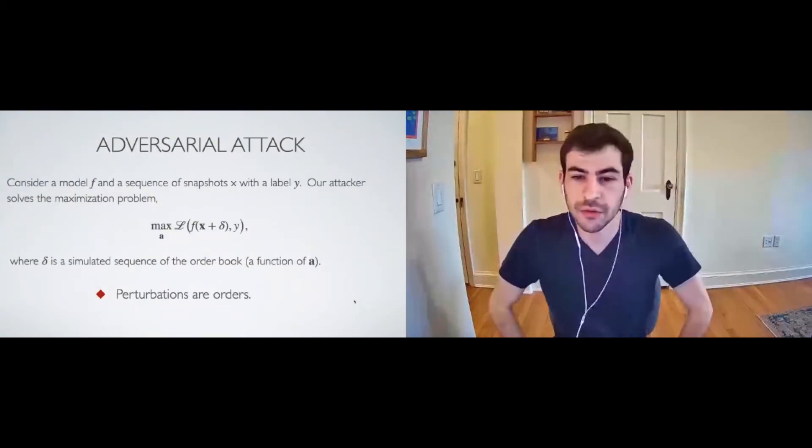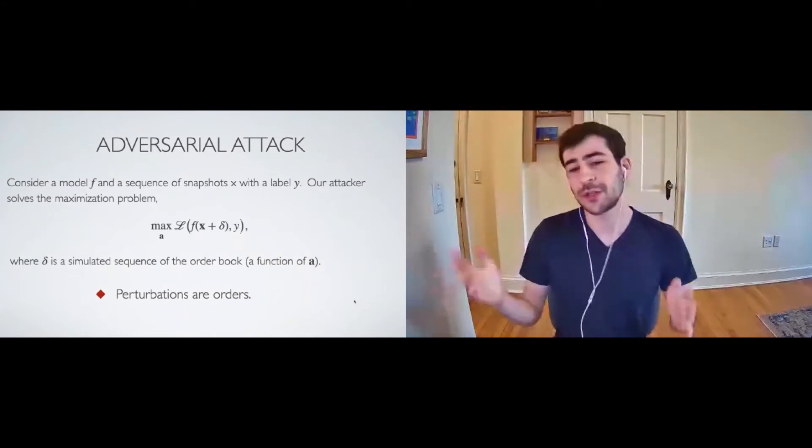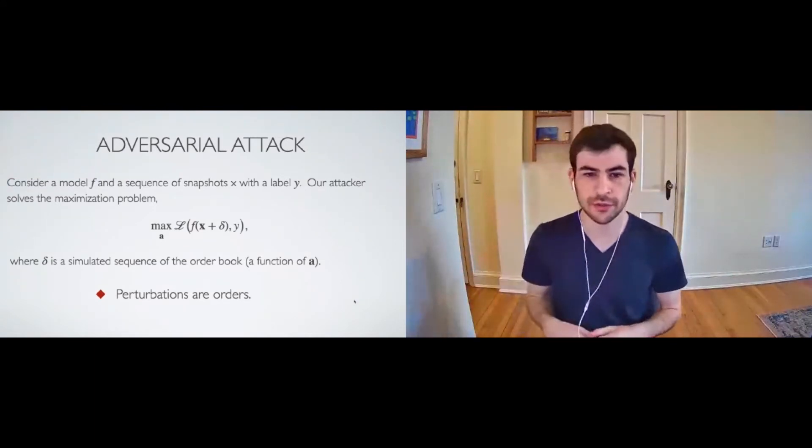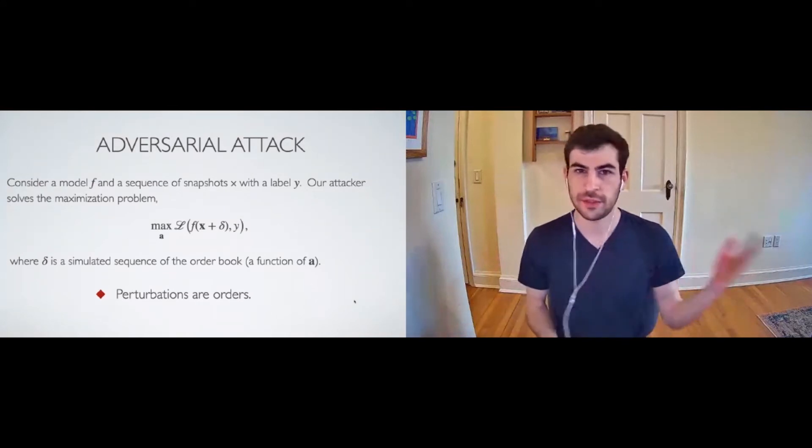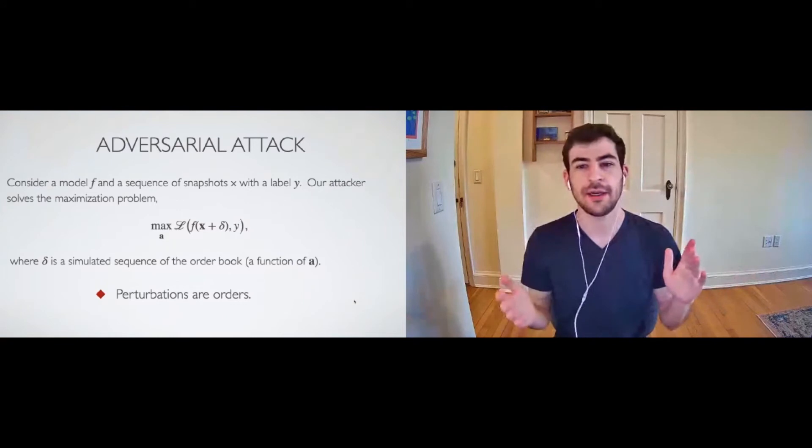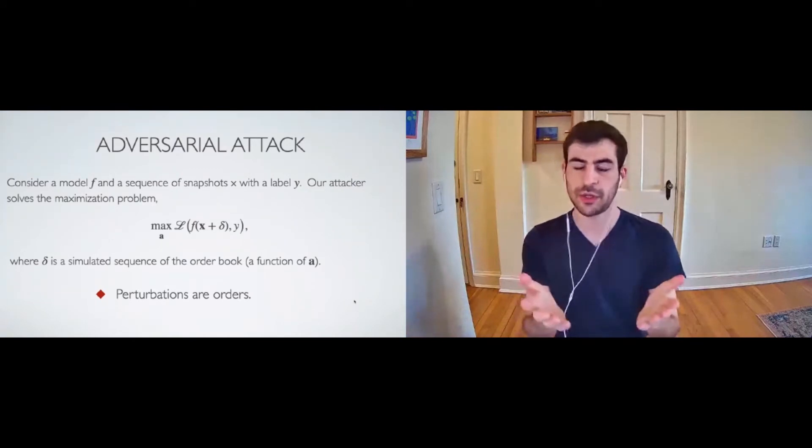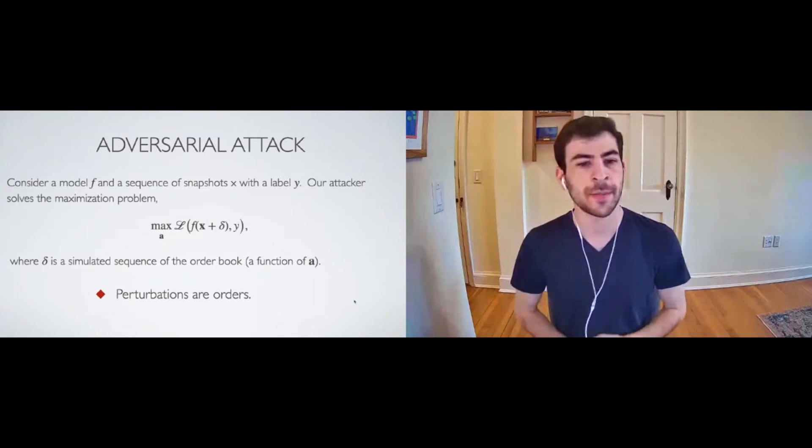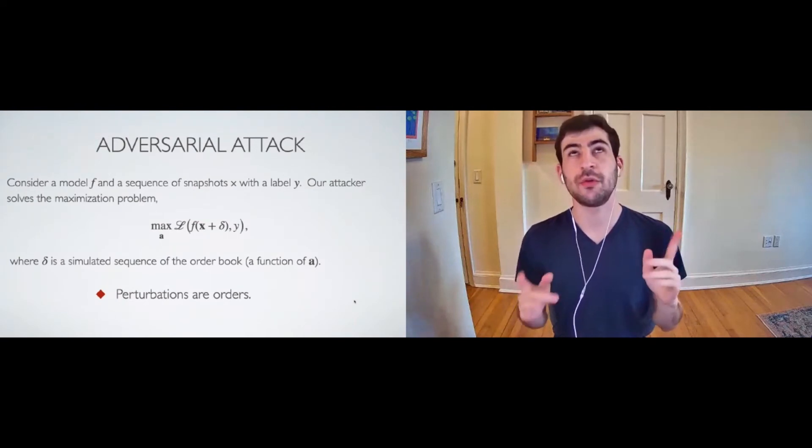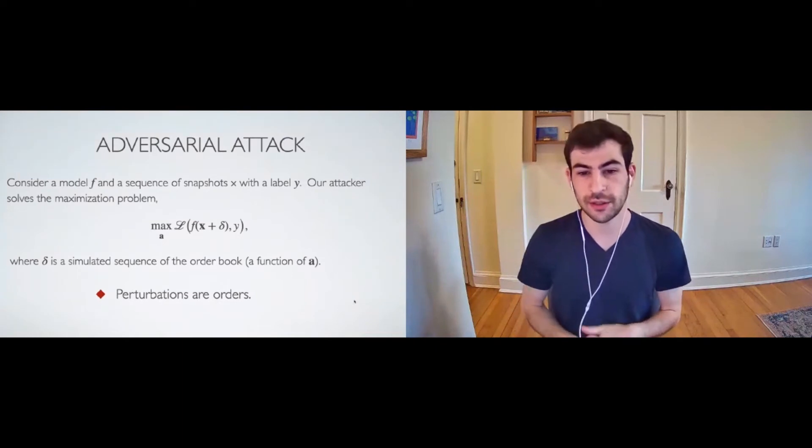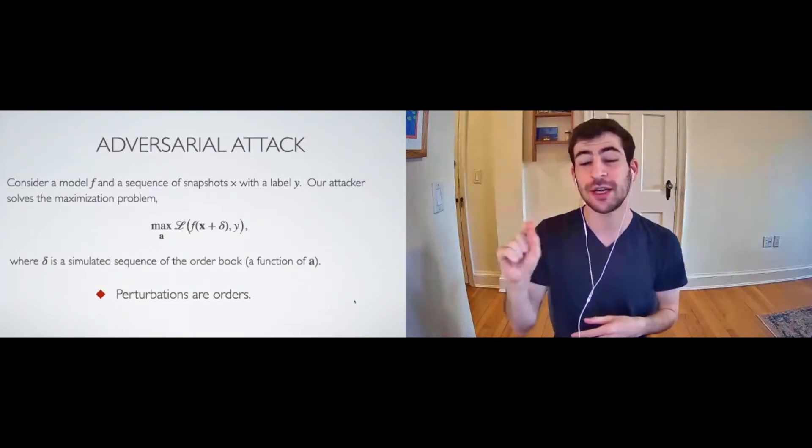The adversarial attack can be written out as a maximization problem. This is a fairly concise form of this. The paper that I mentioned earlier has this written out in quite a longer form. But for the moment, consider the model is F, takes as input the order book, a series of order book snapshots, and it outputs a label Y. We have some loss function for classification that's going to be cross entropy, although this expression is written in general, because adversarial attacks can be done on other systems. So we're looking for the maximum adversarial attack, which is a set of orders A, such that we're looking for that set of A to maximize the loss of F of X plus delta comma Y. And here delta is that simulated sequence of the simulated sequence of order book snapshots. And that's a function of A. So there are some set of orders, and delta is actually what the order book perturbation would look like. So we have to propagate those through time.